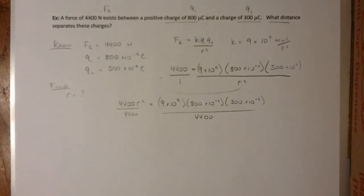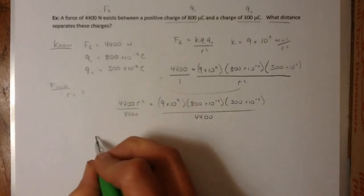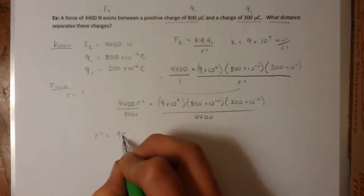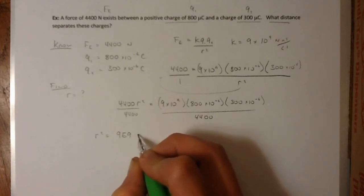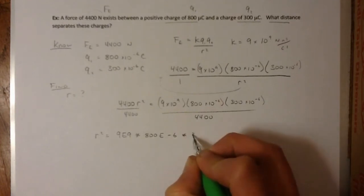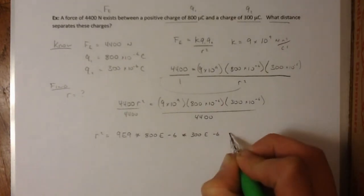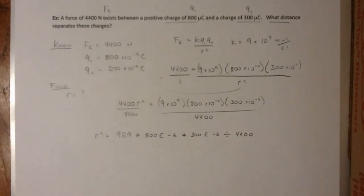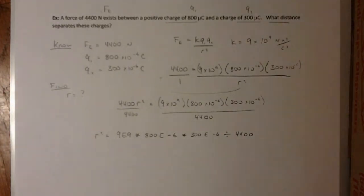Now, when you want to plug this into your calculator, remember you've got these handy-dandy calculators. So you can do this all in one step. You can say R squared is equal to 9E9 times 800E-6 times 300E-6 divide by 4,400. Now, remember that's what R squared is equal to. So once you get a value, you're going to square root it.